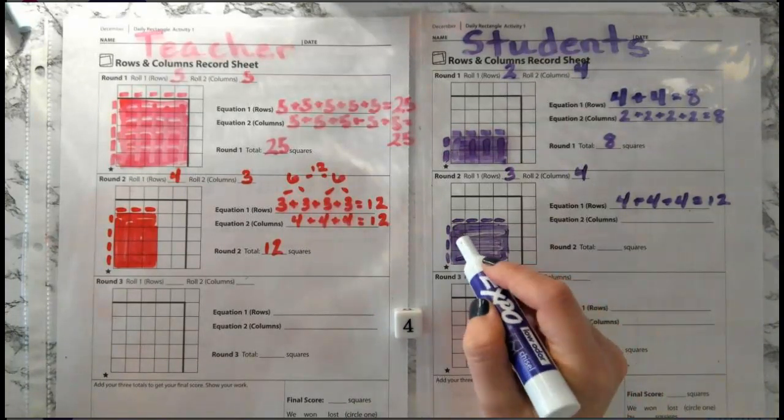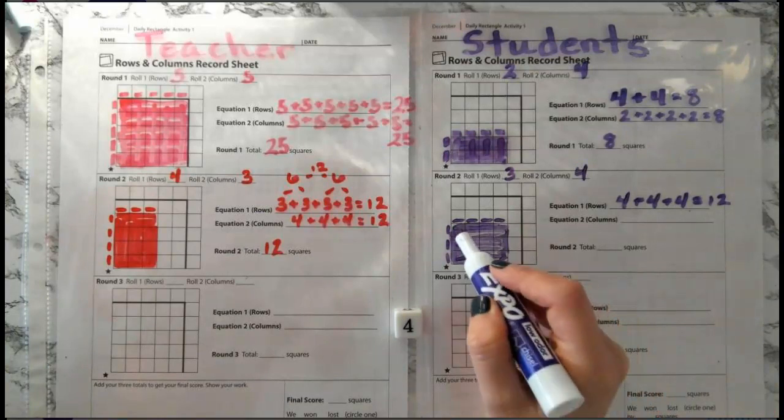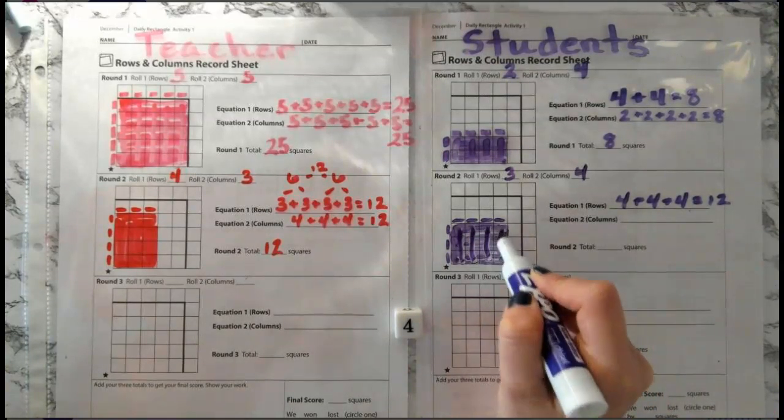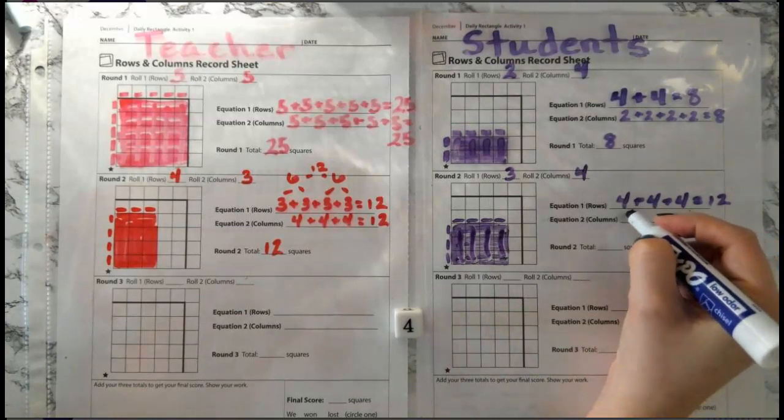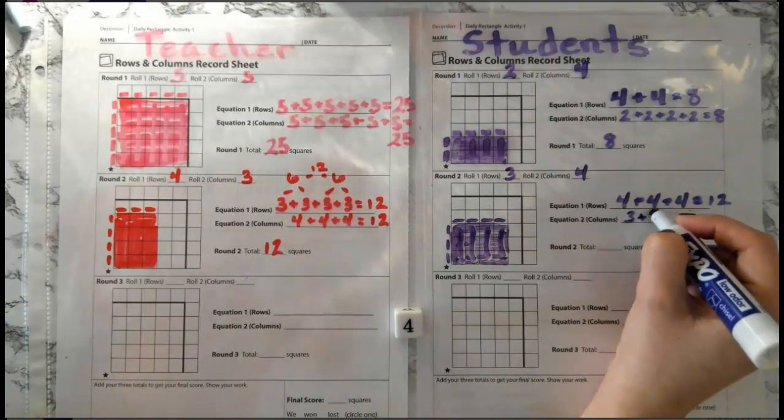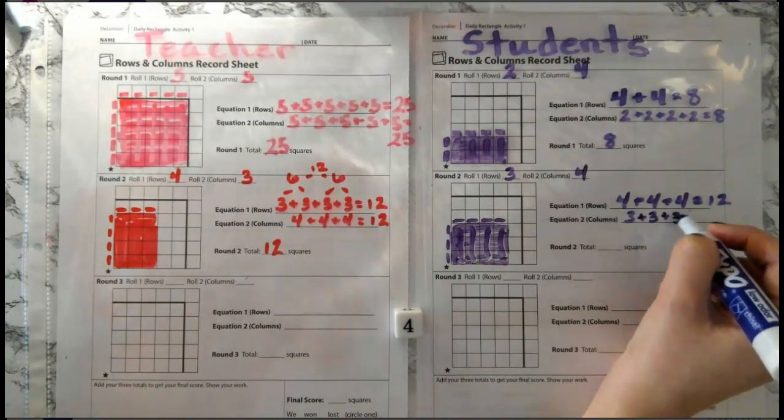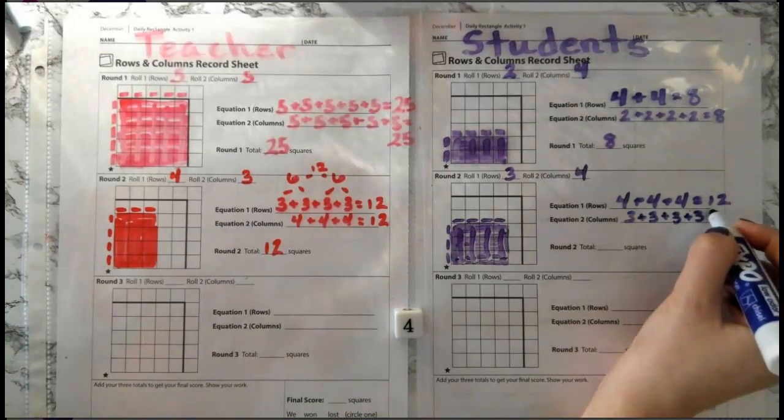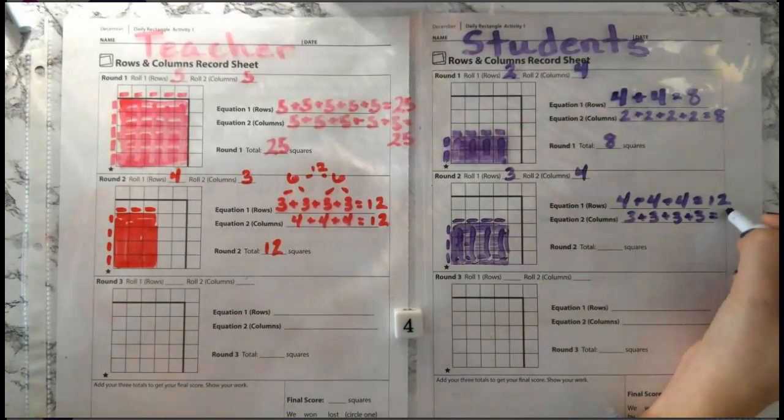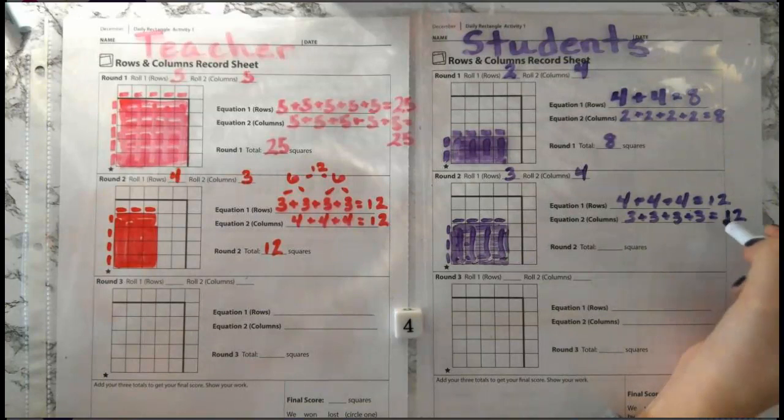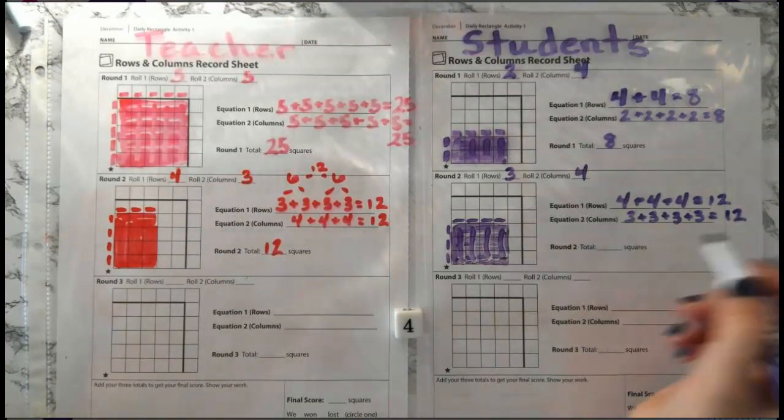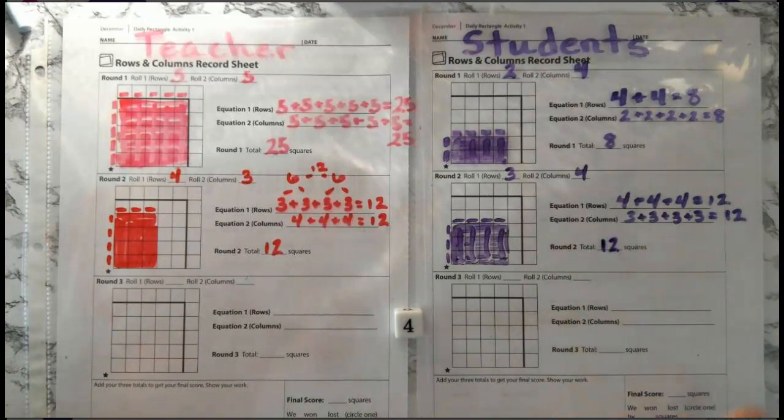Now, I'm going to look at my columns. Can you think of an equation for our columns? Now, I see four columns of three. One, two, three. One, two, three, four columns. So I have three plus three plus three plus three. I know it must be the same answer. If it wasn't, it would be a different array. So I know I have 12 squares. Or, I'm sorry, you have 12 squares for the second round.